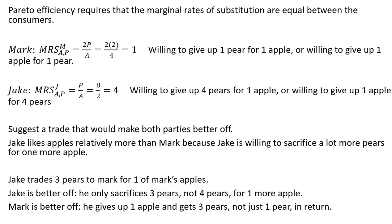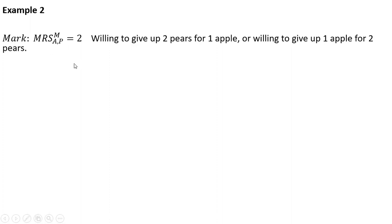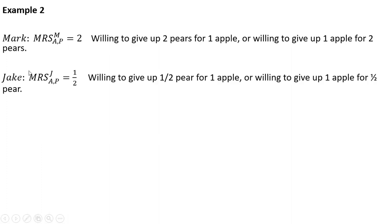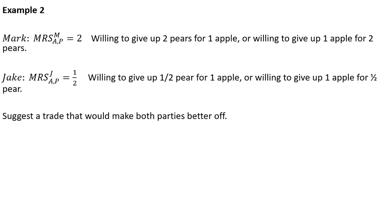Let's do another example. Say Mark's marginal rate of substitution is two, meaning he's willing to give up two pears for one apple, or one apple for two pears. Jake's marginal rate of substitution based on his initial endowment is one half, so Jake is willing to give up half a pear for one apple, or one apple for half a pear, holding utility constant.